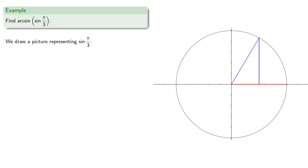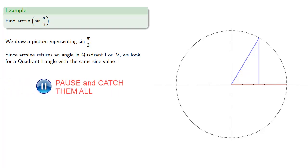Since arc sine returns an angle in quadrant one or four, we look for a quadrant one angle with the same sine value. But since we're already in quadrant one, this will be the same angle we started with, and so arc sine of sine of pi thirds is pi thirds.